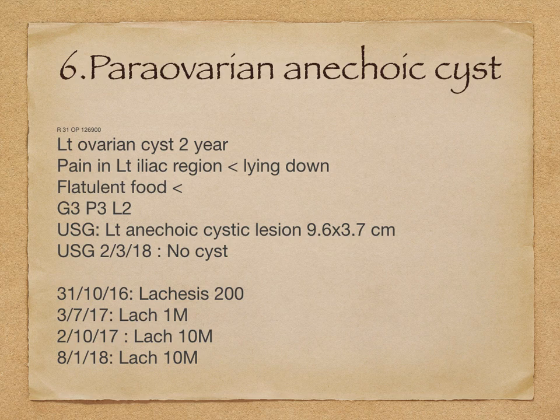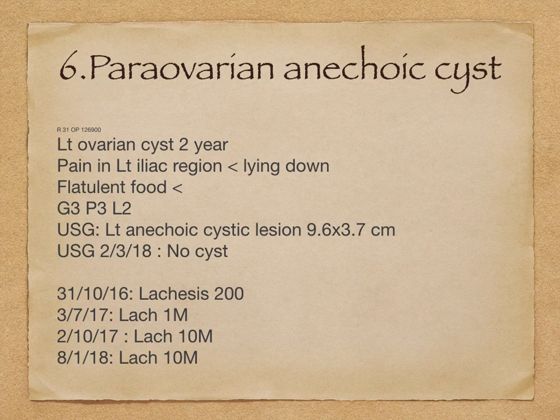Now the sixth case — that is a para-ovarian anechoic cyst. The age of the patient is around 31, female. Left ovarian cyst since the last two years. Pain in the left iliac region that aggravates on lying down. USG: left anechoic cystic lesion measuring 9.6x3.7 cm. Remember, that is in centimeters — a large anechoic cyst of 9.6x3.7 cm.